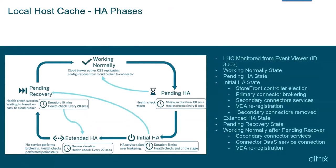There are several phases that the cloud connectors go through when deployed for LHC. These phases can be monitored from application events in Event Viewer and are reported from the Citrix Remote Broker Provider. Event ID 3003 is logged anytime the cloud connector is transitioning from one state to another.